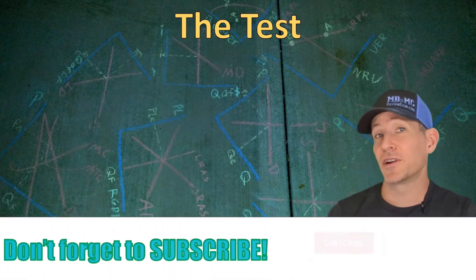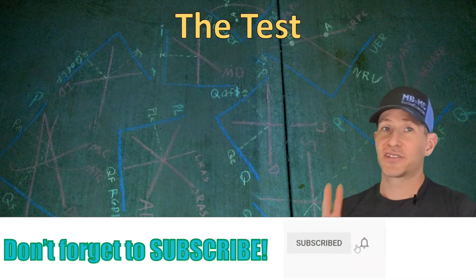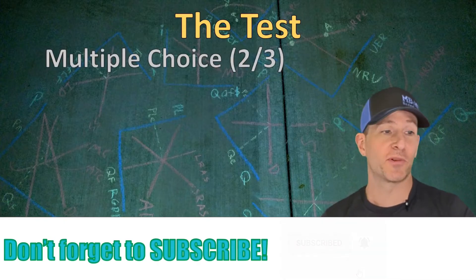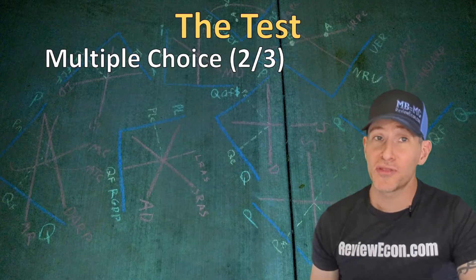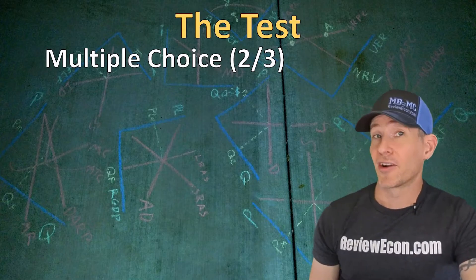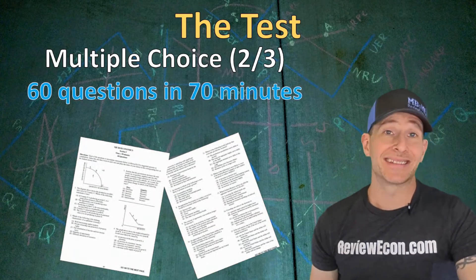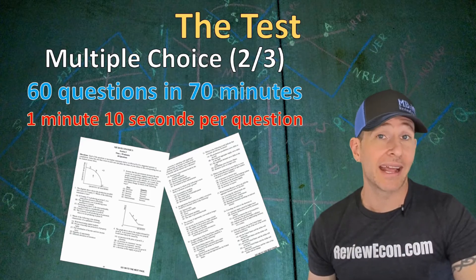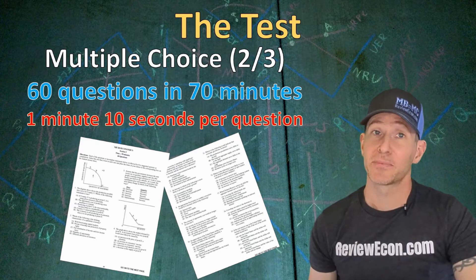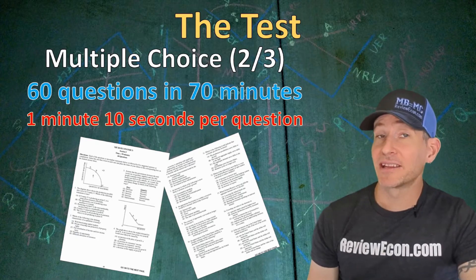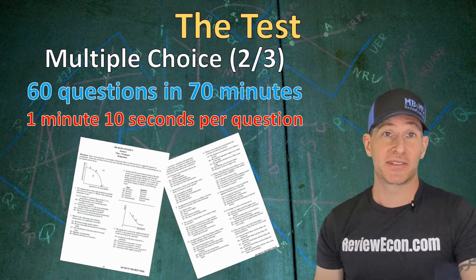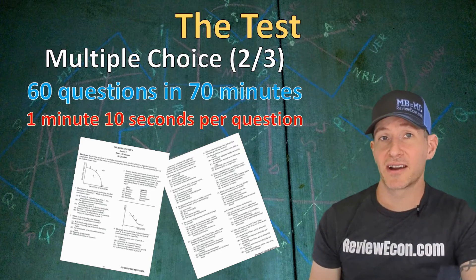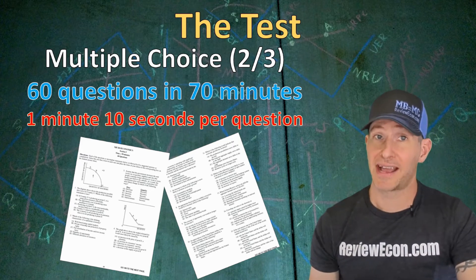First, we need to talk about what you should expect on the test. The test has two sections: multiple choice and free response. The multiple choice portion is two-thirds of your overall score. There are 60 questions to answer and 70 minutes to answer them, which averages out to a minute and 10 seconds per question. That time can be a little tight, so keep track of your time as you go through the multiple choice questions.